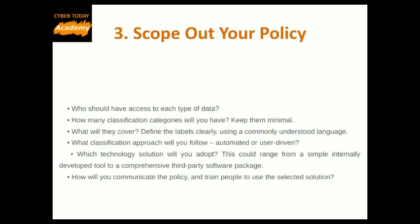Step 3: Scope out your policy. Who should have access to each type of data? How many classification categories will you have — keep them minimal. What will they cover? Define the labels clearly using commonly understood language. What classification approach will you follow — automated or user-driven? Which technology solution will you adopt, ranging from a simple internally developed tool to a comprehensive third-party software package? And how will you communicate the policy and train people to use the selected solution?